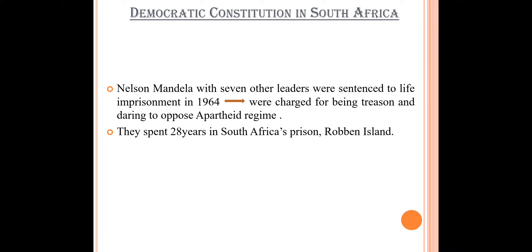What do we mean by treason? Anyone who goes against the country or does something against the country is charged with treason. So Nelson Mandela was charged with treason and was to spend 28 years in prison in South Africa, that is Robben Island.